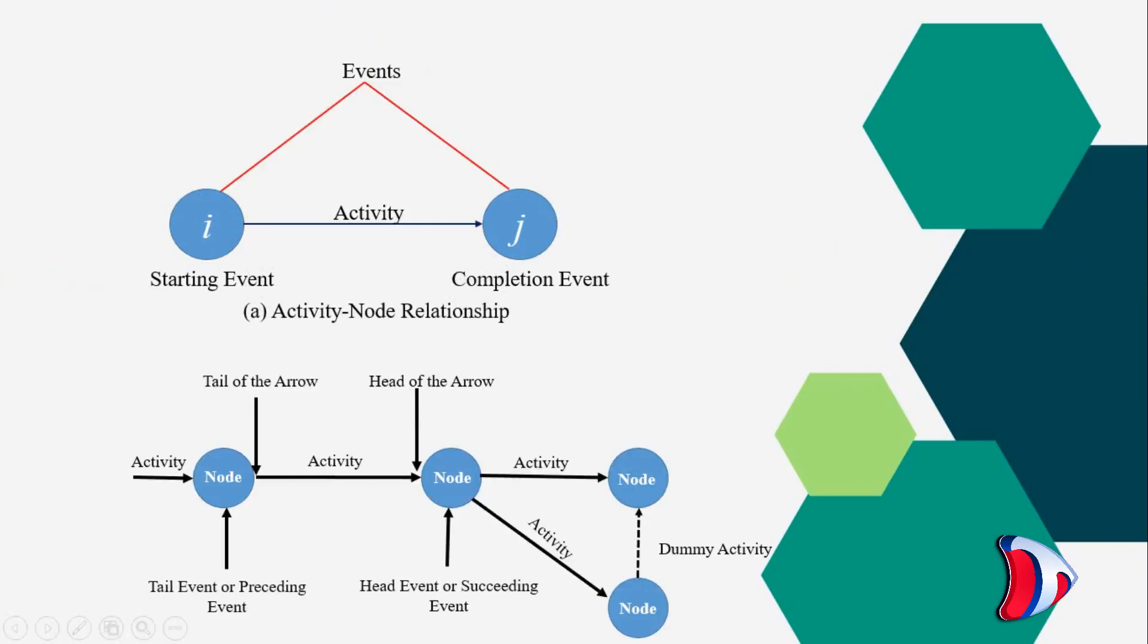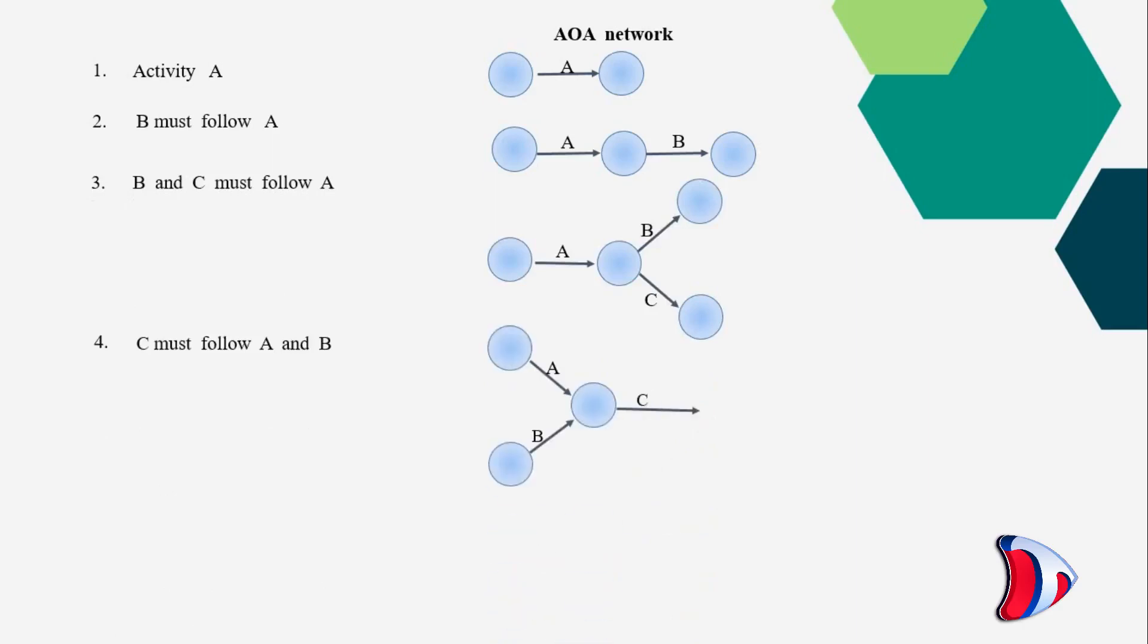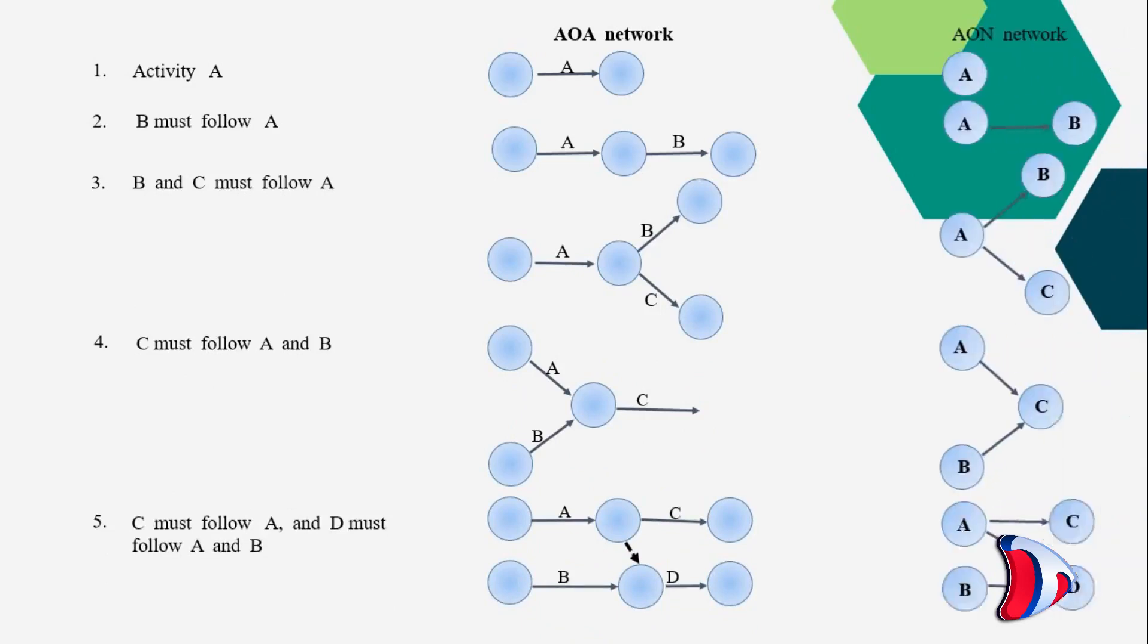The tail of an activity represents the start and head the completion of work. Rules for activity on arrow network construction: activity B must follow activity A. Activity B and C must follow activity A. Activity C must follow activity A and B. Activity C must follow activity A and activity D must follow activity A and activity B.